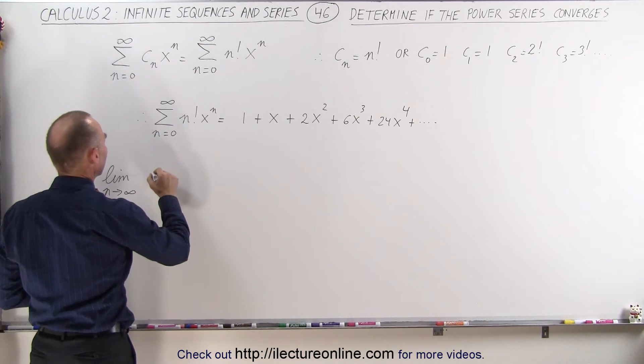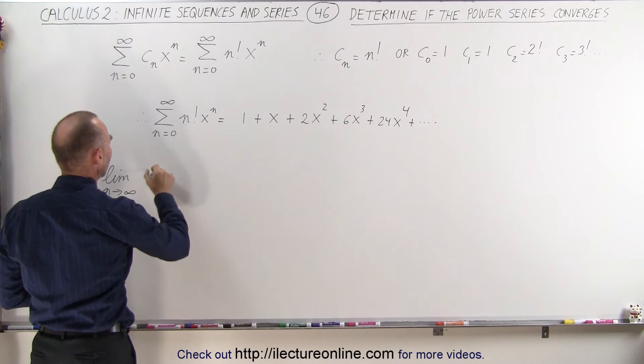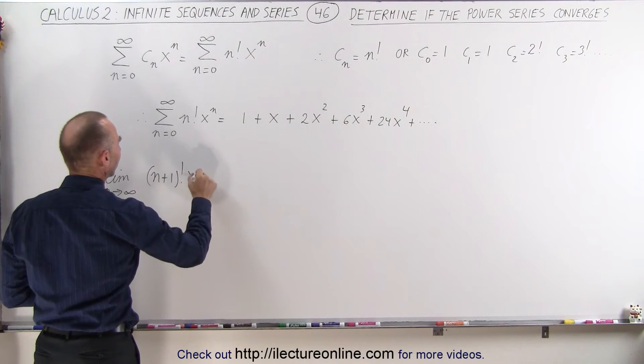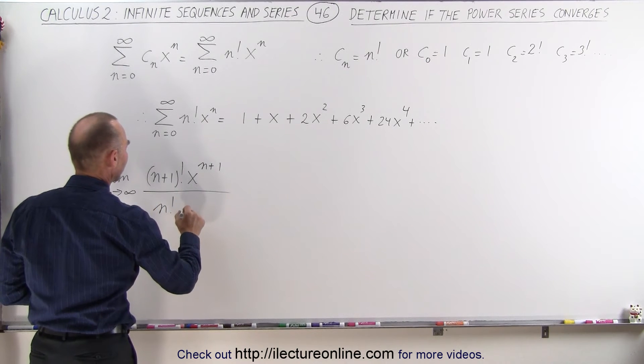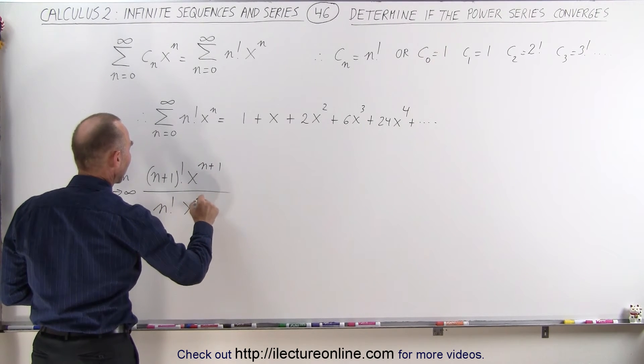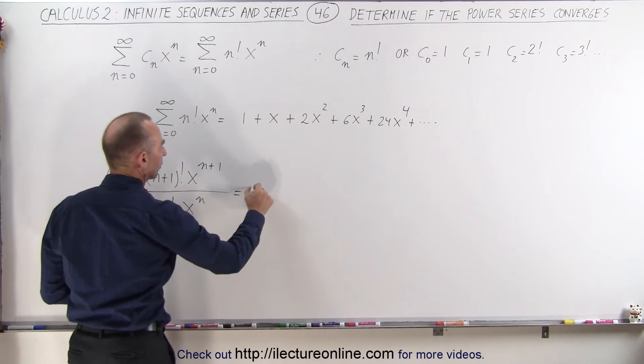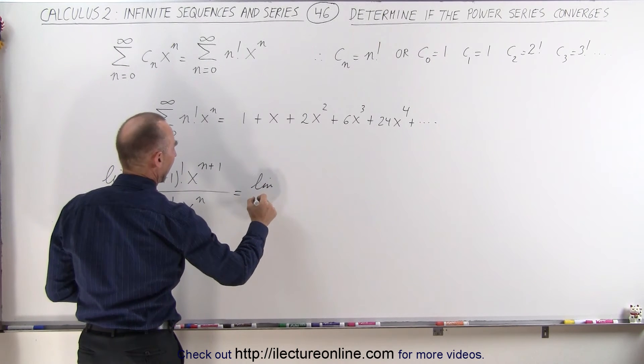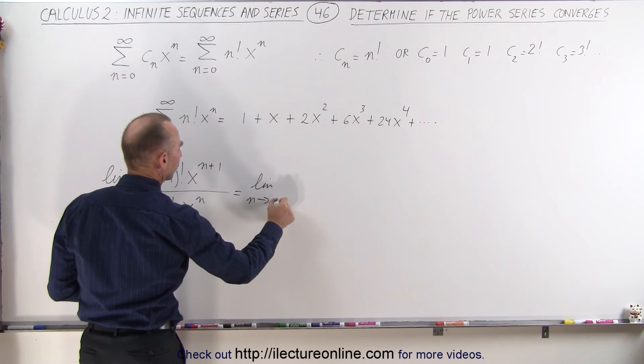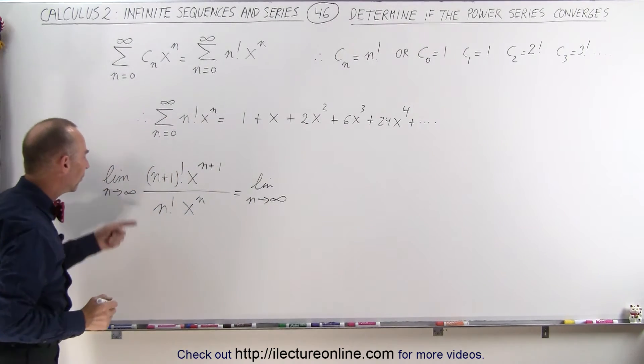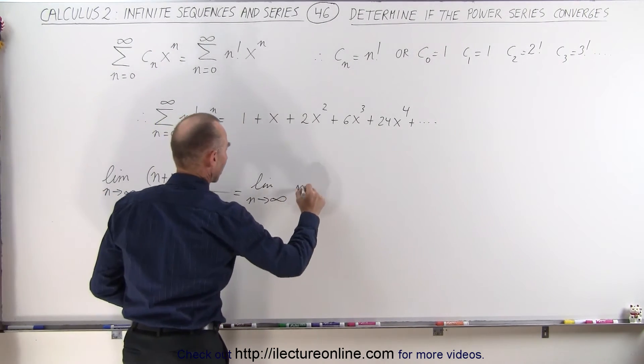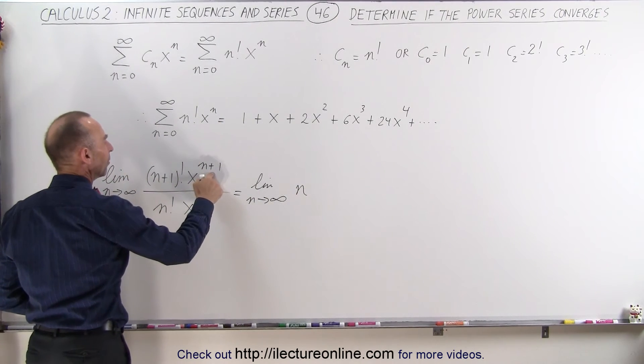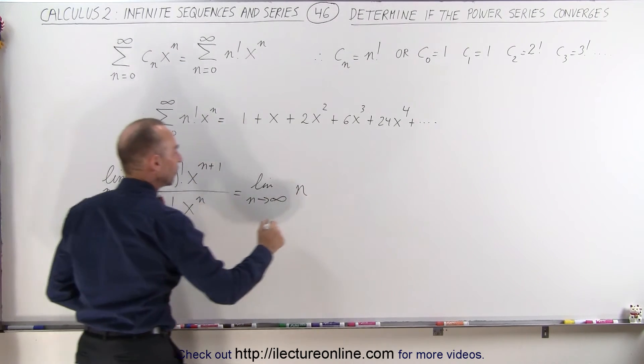In other words, we're going to take n plus 1 factorial times x to the n plus 1 divided by n factorial times x to the n power. So this will be equal to the limit as n approaches infinity of, well, n plus 1 factorial divided by n factorial is simply n plus 1, and x to the n plus 1 divided by x to the n is simply x.